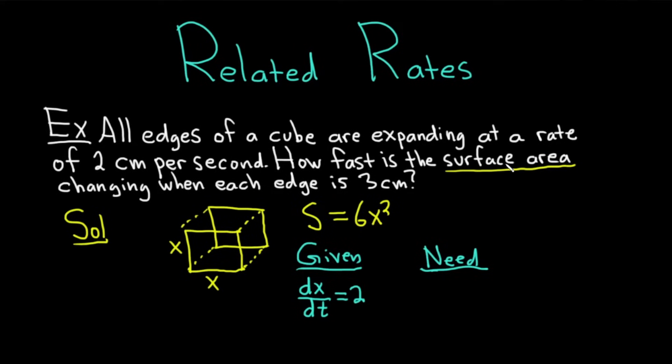How fast is the surface area changing when each edge is 3 cm? So we're looking for the rate of change of the surface area. We called that S, so it will be dS/dt. But it's more than this. We want to know this when each edge is 3 cm. So the edge is x. So basically we draw a line, and we put x equals 3. This basically means that we want to take dS/dt and evaluate it when x is equal to 3.